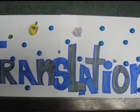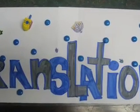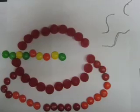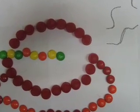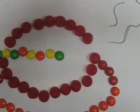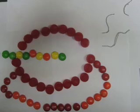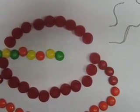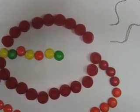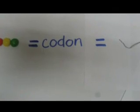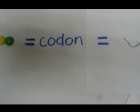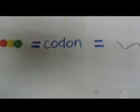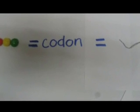Translation occurs on the ribosome. In translation, the ribosome reads the sequence of nitrogenous bases on the RNA and produces a strand of amino acids. The code for each amino acid is carried on three adjacent nitrogenous bases called a codon on the messenger RNA.